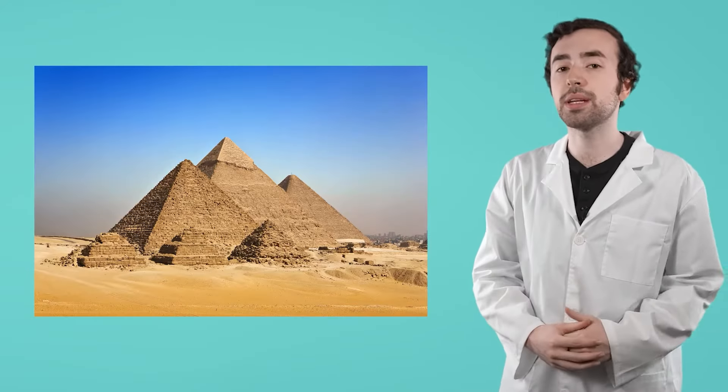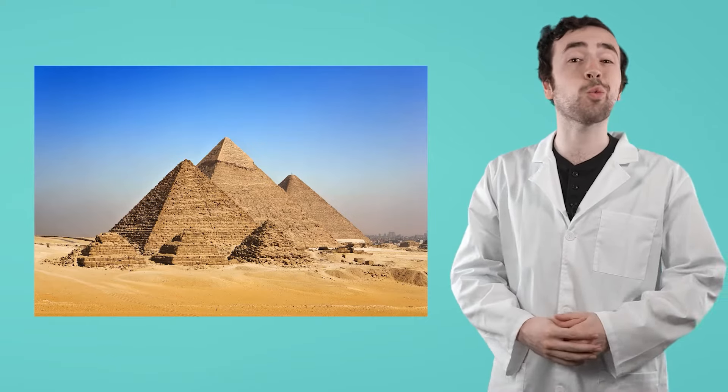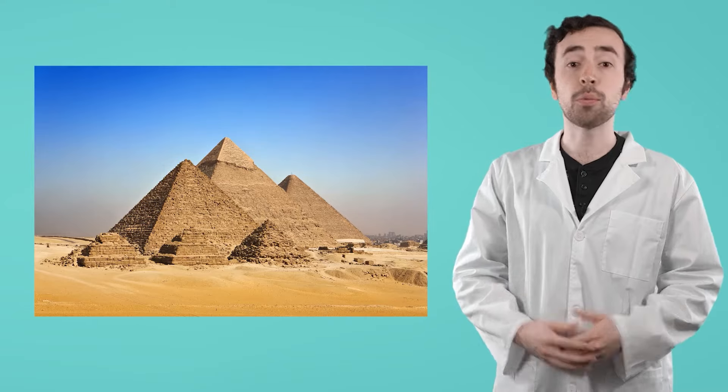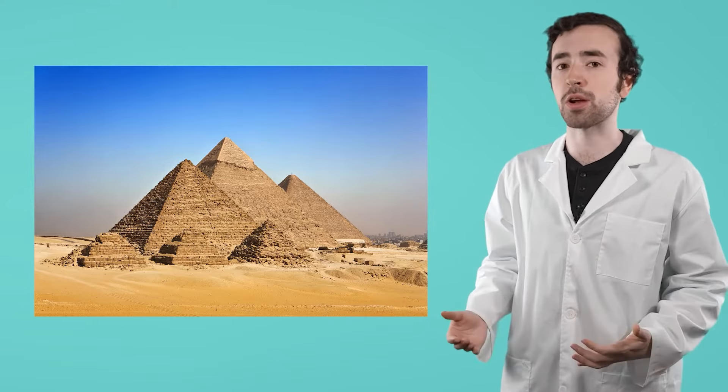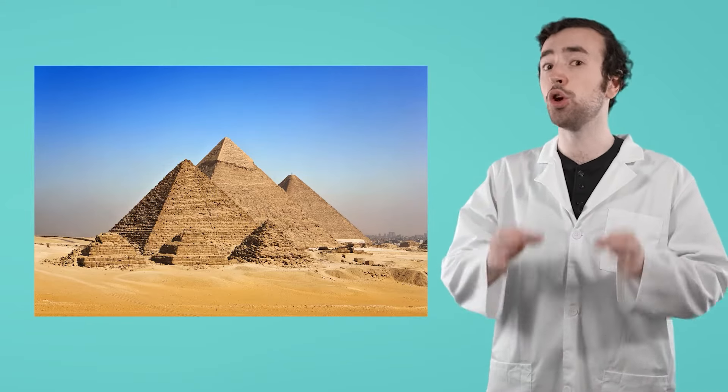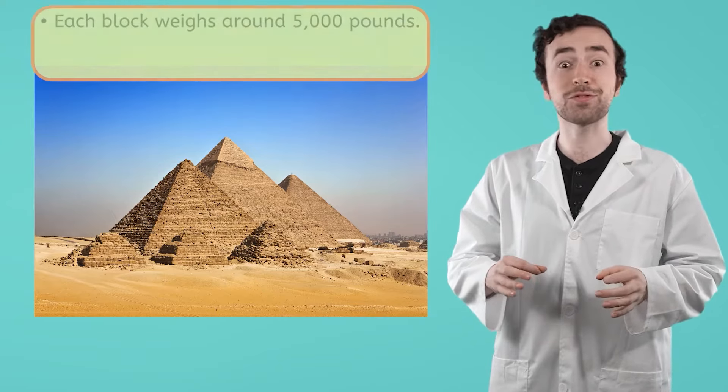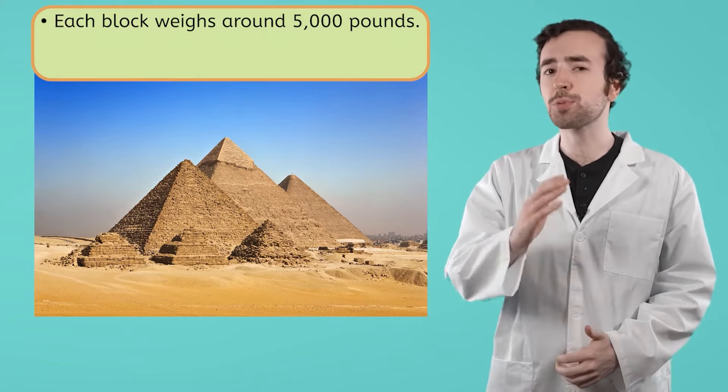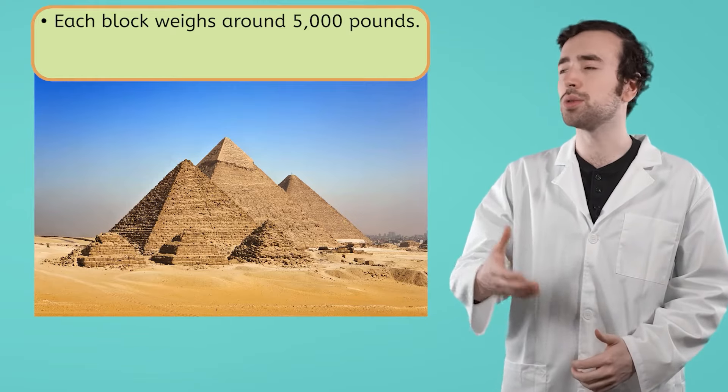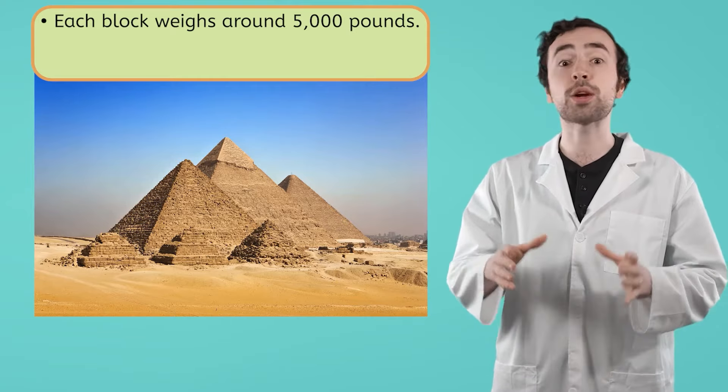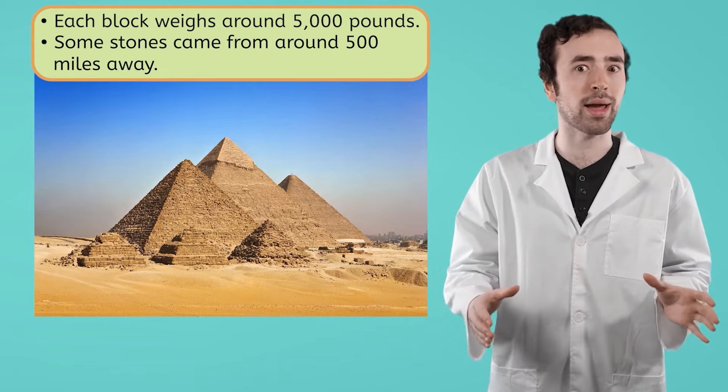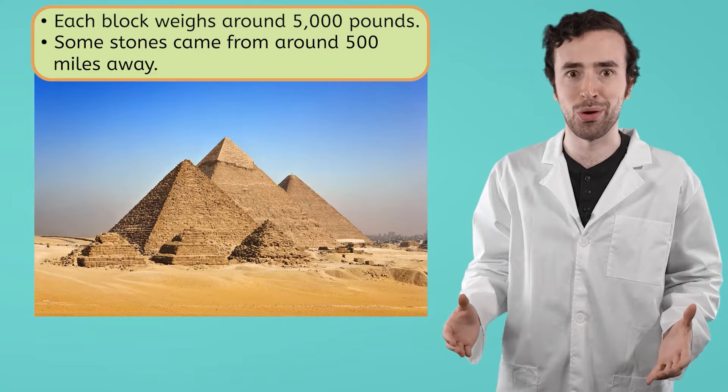The Great Pyramids of Giza were built around 4,500 years ago. The blocks of stone used to build the pyramid each weighed about two and a half tons. That's 5,000 pounds. On top of their immense weight, it's believed that the stones used along the outside of the pyramid were harvested from a quarry that was about 500 miles away. That's super long.